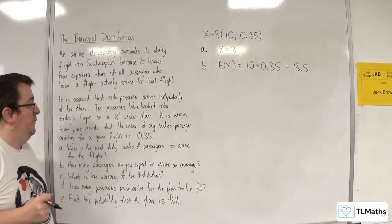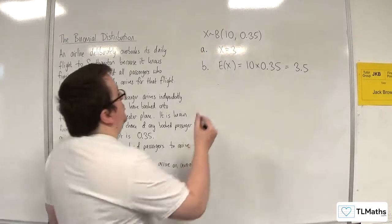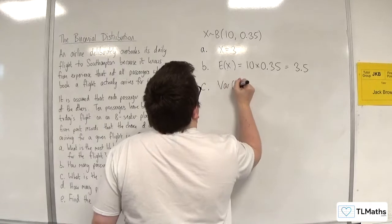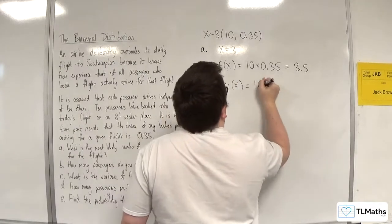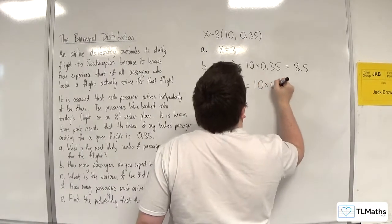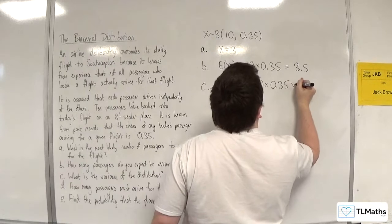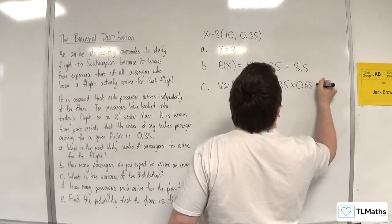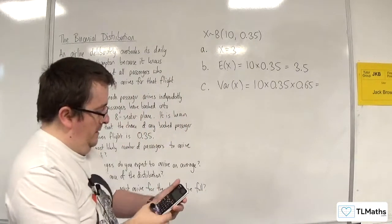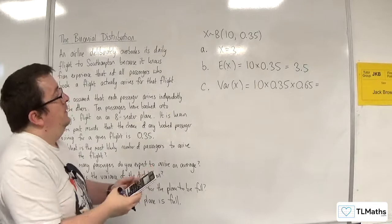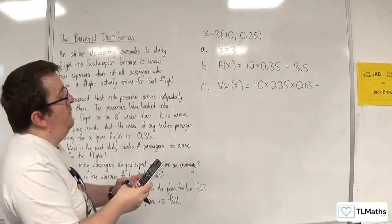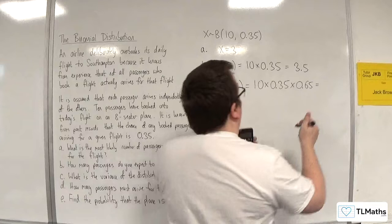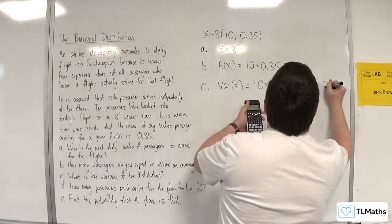Part C: what is the variance of the distribution? The variance is calculated by doing n times p times (1 minus p), so 10 times 0.35 times 0.65, which gives 2.275.